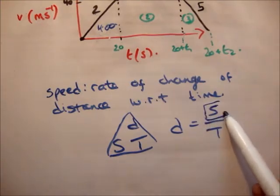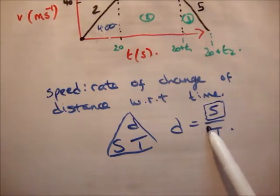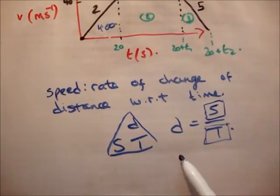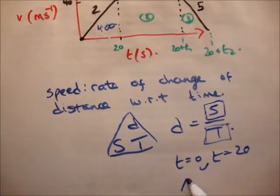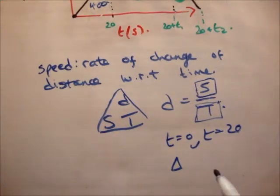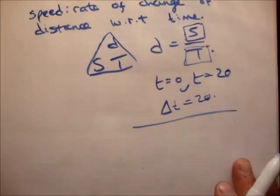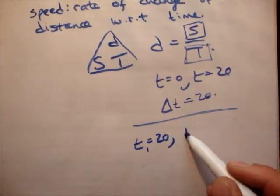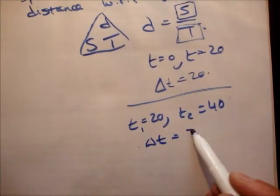It's actually a change in speed — you don't realize it, but it's a change in speed. Like, if something took 20 seconds, well then you're saying t is equal to 0 and t is equal to 20. Therefore delta — this triangle means delta, it's the Greek letter delta, and that usually in maths means a change. So delta t is equal to 20 seconds, and that's what you'd use. Or if t1 was 20 seconds and t2 was 40 seconds, delta t is still equal to 20 seconds.